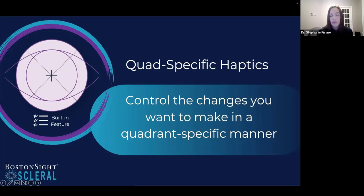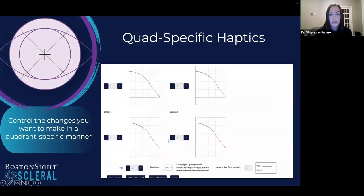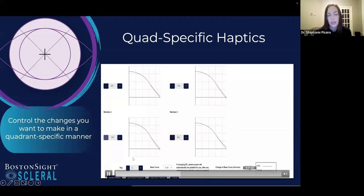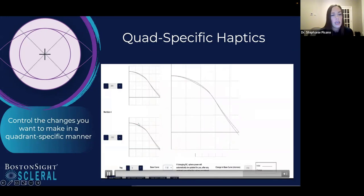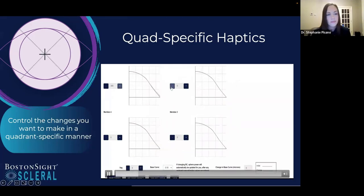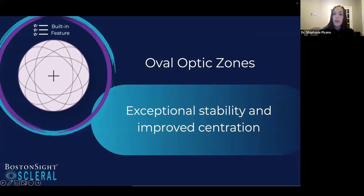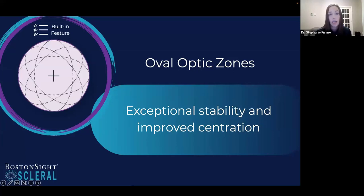Using the quadrant-specific haptic, in FitConnect — the web-based software — you can make changes and see them in real time. You can change each haptic by 50-micron increments, and also change the sagittal depth and base curve, giving you a lot of control. This helps the lens center better, creates a more well-aligned fit, and is more comfortable for the patient. The lens also features an oval optic zone, matching the oval appearance of the limbus. This helps with conjunctival prolapse, preventing excessive limbal clearance in some areas and minimal in others, and is already built in.